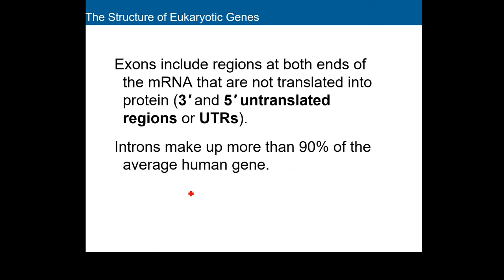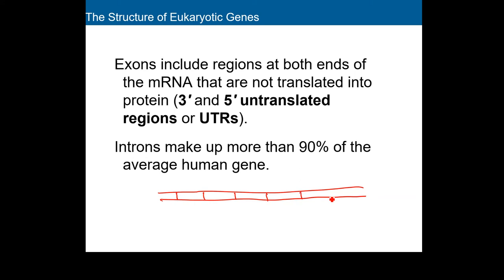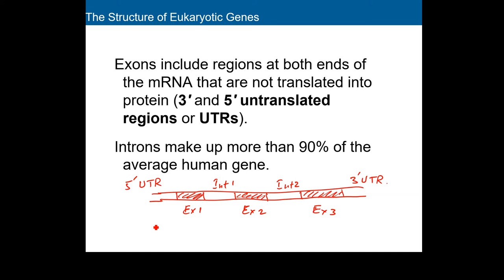There are other regions at the DNA level too. If I want to draw a gene at the DNA level, it will look something like this. These areas are exons: exon one, exon two, exon three — and this is intron one and intron two. Then, other than these, there are other regions called UTRs — five prime and three prime UTR. Those are untranslated regions on both ends of the DNA.